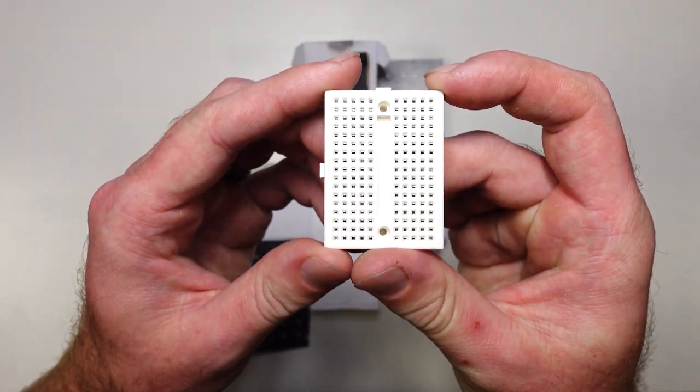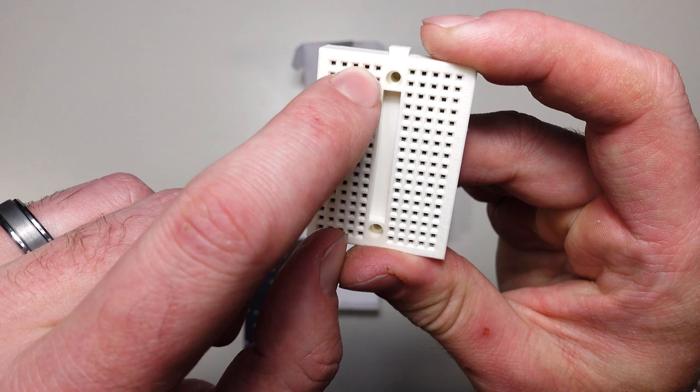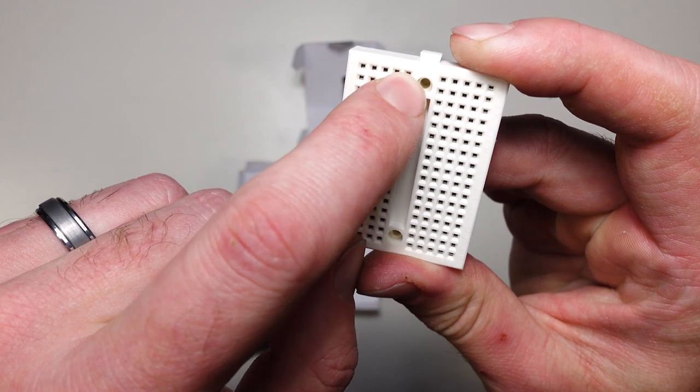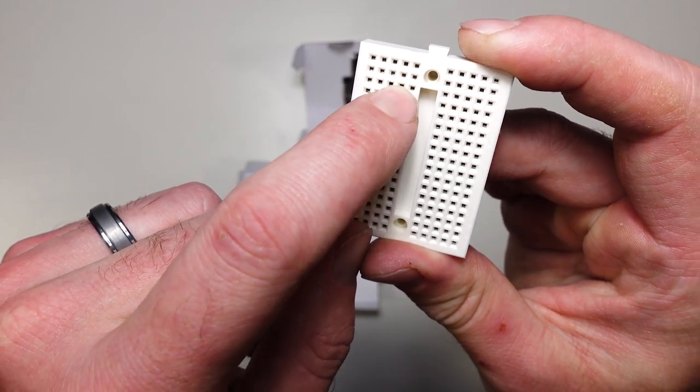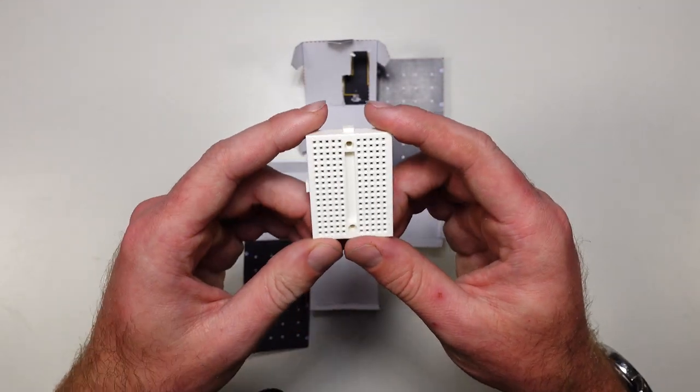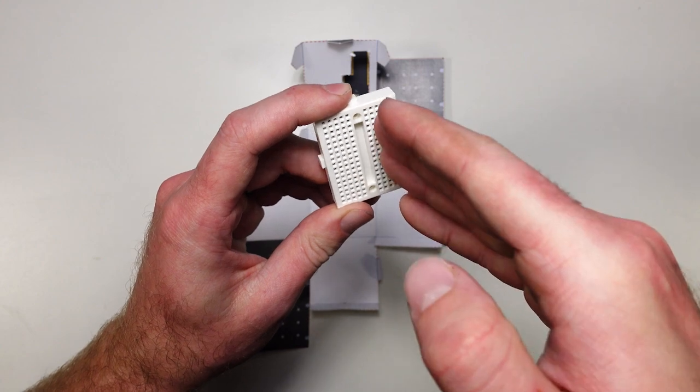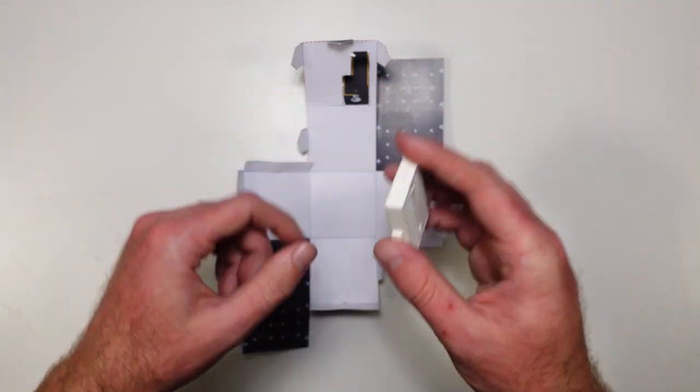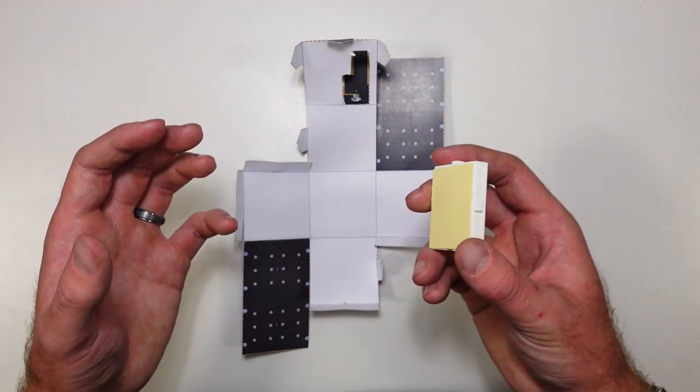So the way a breadboard works is that everything we put in the same row is going to be connected to everything else in that row, but each row is separate and we'll talk a little bit more about how that works in a sec. But basically we're going to be sticking our components into this grid, but the first thing we're going to do is actually stick it to our cubesat.